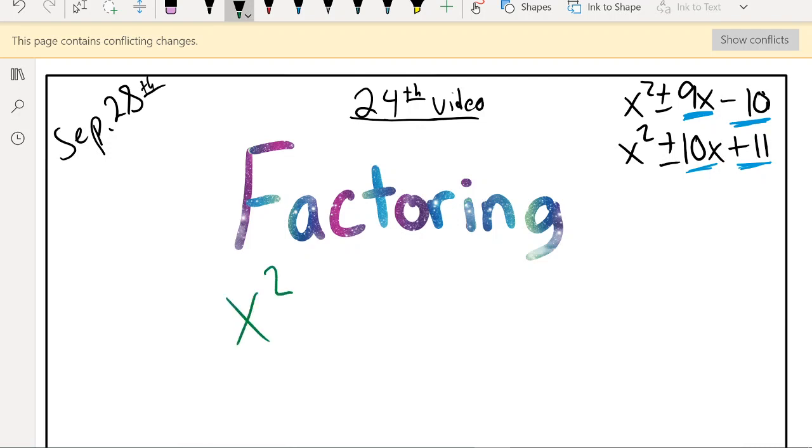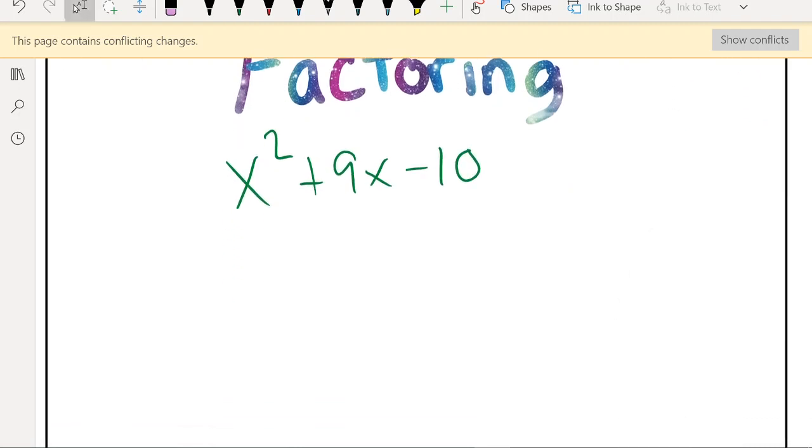We got x squared plus 9x and a minus 10. So if this is your problem here, in order to factor, we have to take the last number and get factors of 10 that add or subtract to give me 9. So if I want 10, I can't just multiply positive 1 and positive 10. One of these numbers has to be negative, so let's just make the 1 negative. Let's see if it works. And obviously, if it doesn't work, then you can change the signs, make the 10 negative and the 1 positive and see if that works, but it looks like this is going to work.